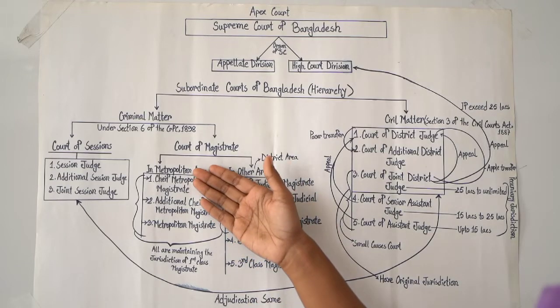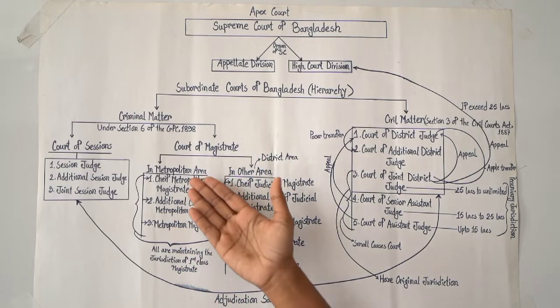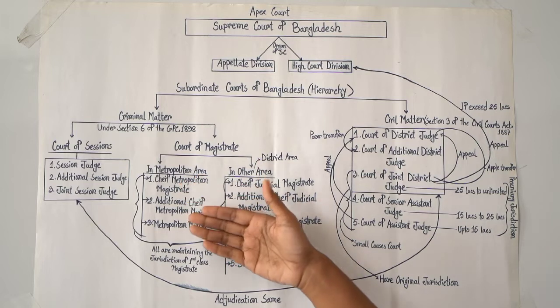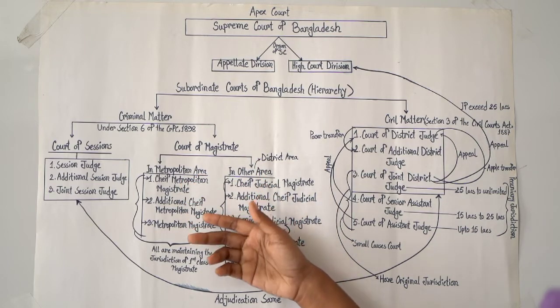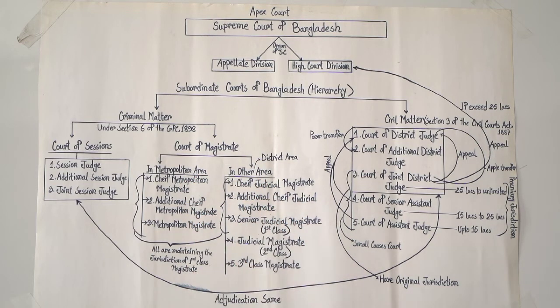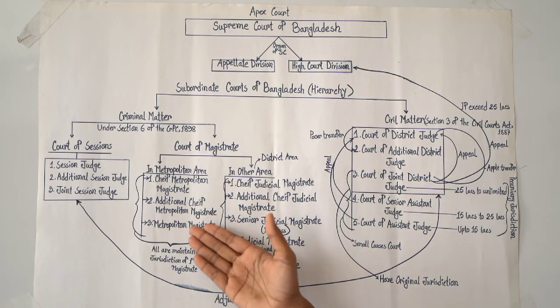In the case of metropolitan areas, the magistrates are the Chief Metropolitan Magistrate, then the Additional Chief Metropolitan Magistrate, and then the Metropolitan Magistrate.